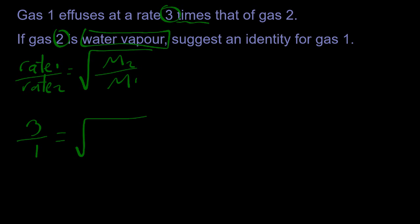And if gas 2 is water vapor, well, that's 18, isn't it? Hydrogen, hydrogen, oxygen. And that leaves me to solve for gas 1.